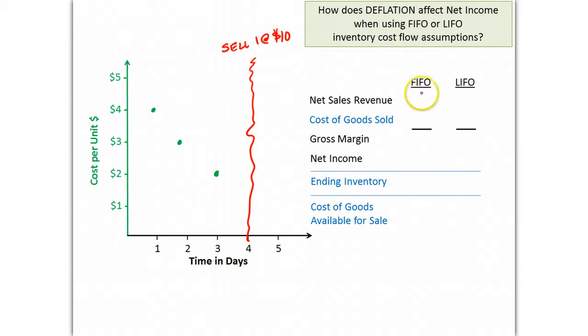So that means whether it's FIFO or LIFO, that sales revenue is going to be $10 because the cost flow assumption does not affect the price you charge to your customers. Then, on day five, you buy one gumball at a unit cost of $1.